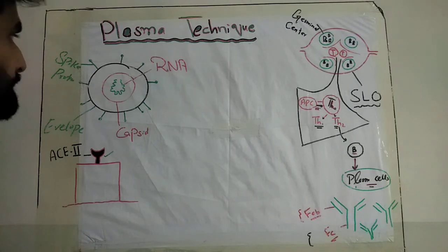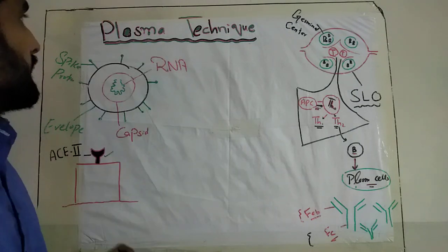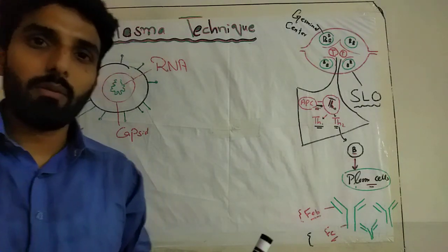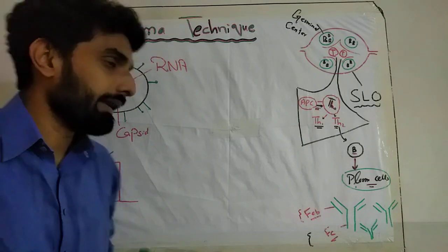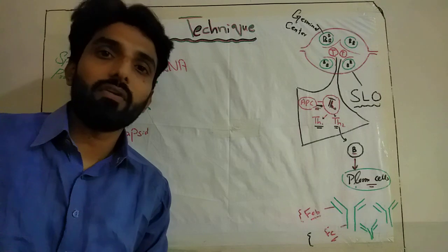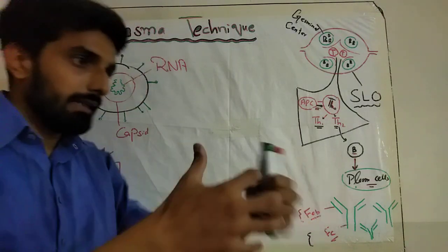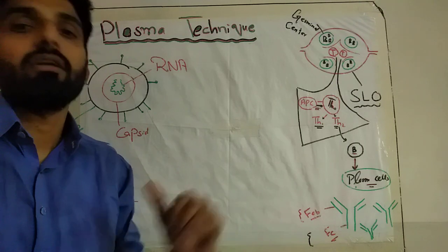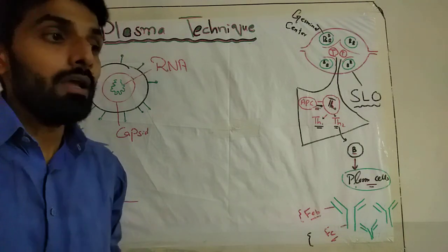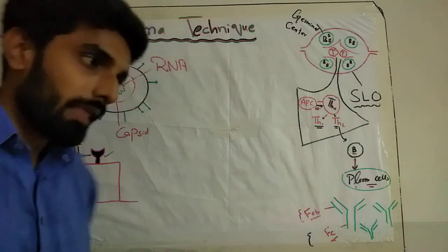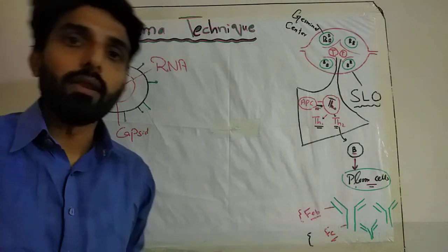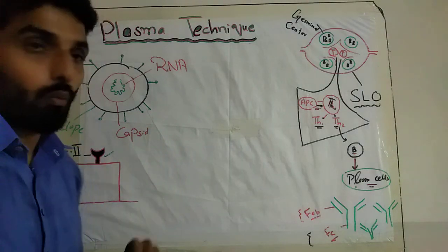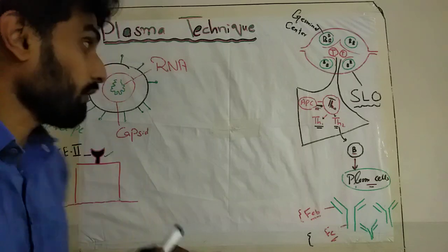Now let's talk about the plasma technique. The plasma technique is a technique in which blood is taken from a person who has recovered from COVID-19. The cellular portion and the plasma portion of the blood are separated, and then the plasma is injected into another person who is suffering from coronavirus. After a few days, hopefully the patient will start recovering. Let's talk about the exact mechanism — the immunology of the plasma technique.